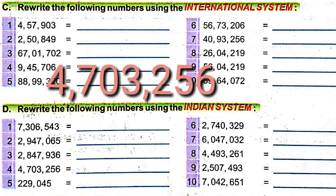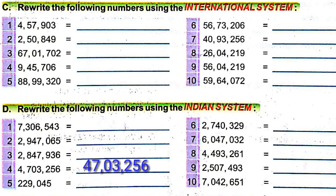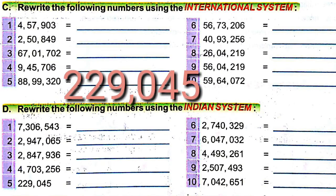Next, number four — the given number is 4,703,256. Here also seven digits. We have to put commas before three and five digits, that is after 47 and then 03. The number is 47,03,256.